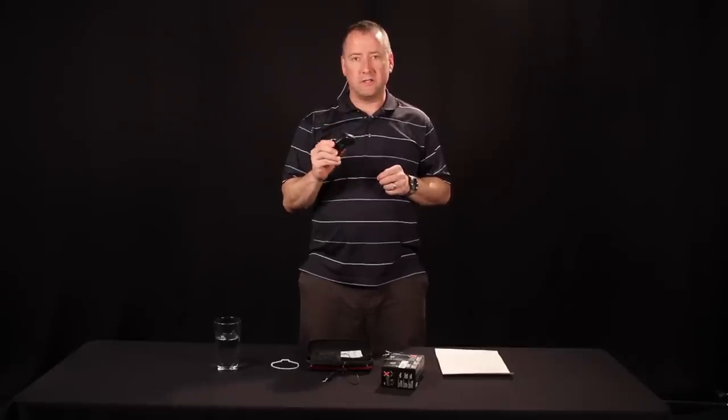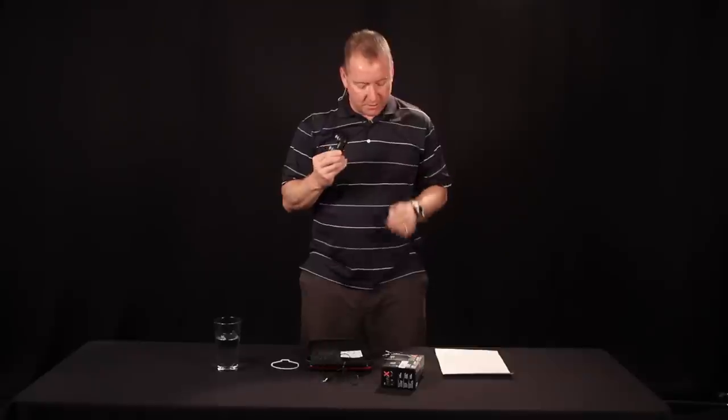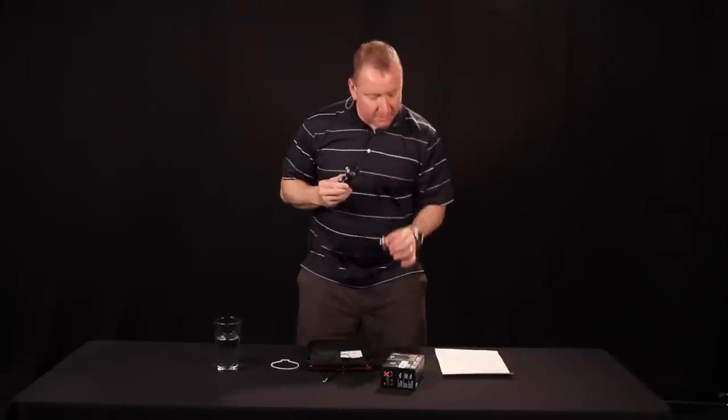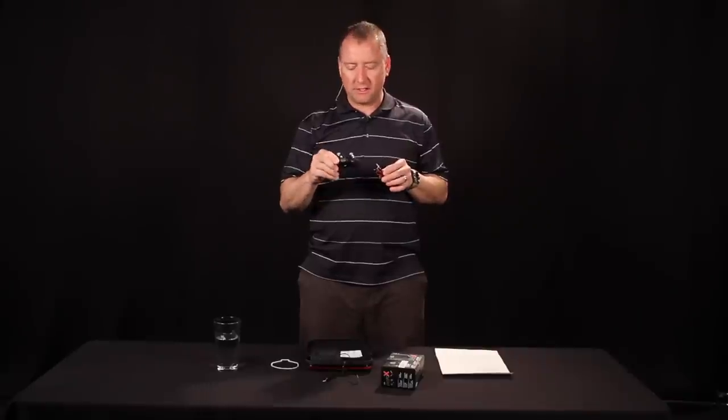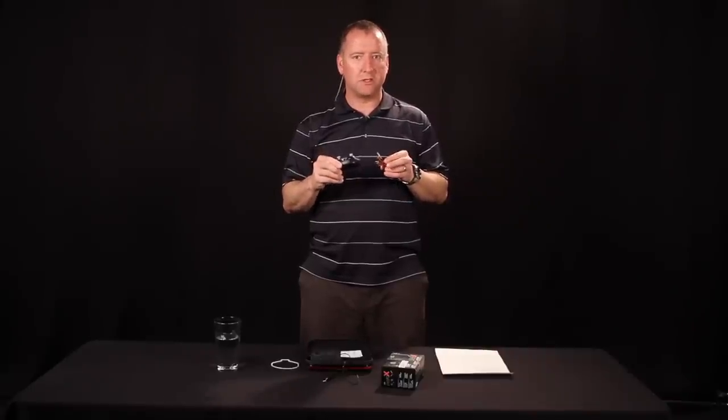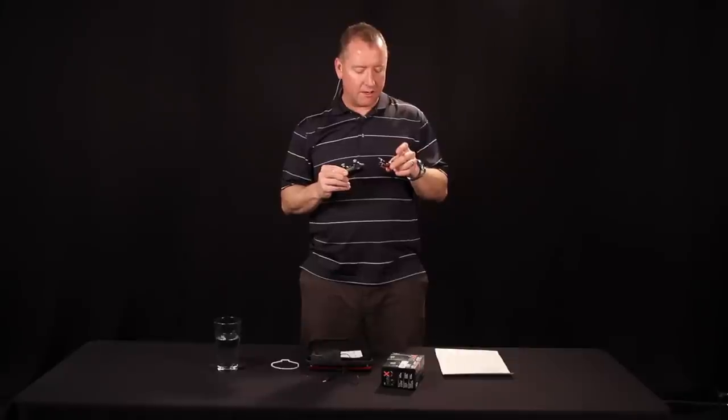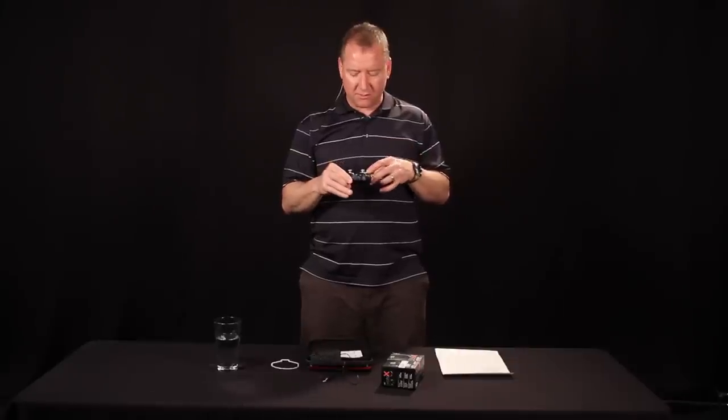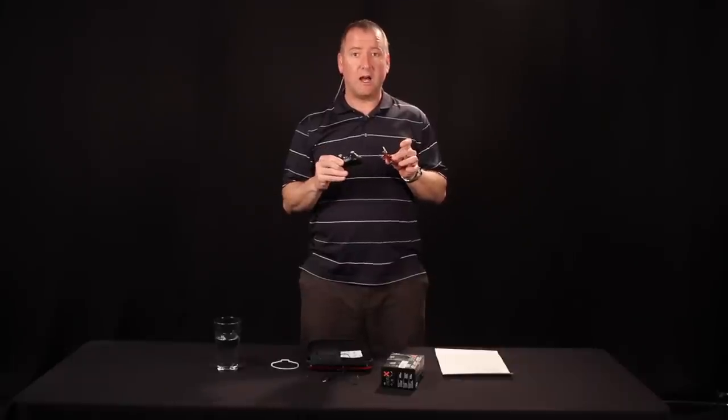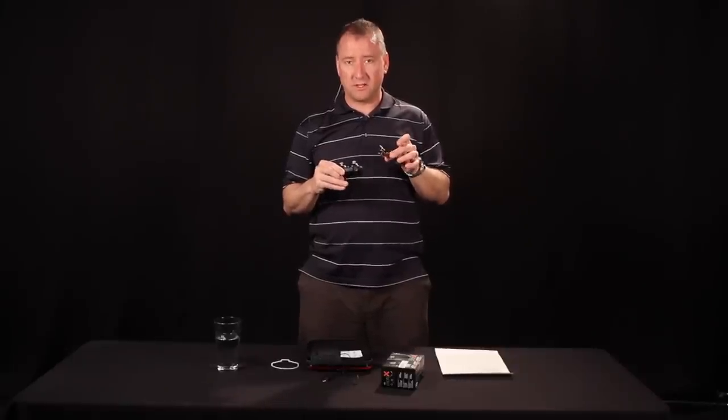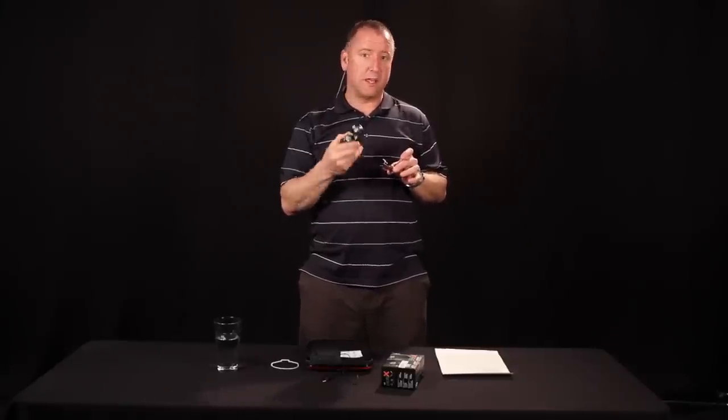One cool thing about this remote is you can actually bind this to a Hubsan X4 which is a bigger remote. I don't have one here but if you don't like the tiny size the Hubsan X4 is a good alternative. You can buy them online for about 20 bucks and the Hubsan X4 allows you to do some additional trim and turn the LEDs on and off. And it also will give you a high and low rate so if you want to do flips and such you can't do it with this but you can with the Hubsan X4.